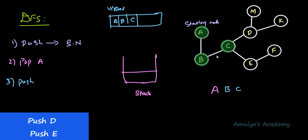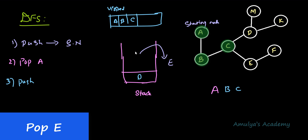Now C is visited. We push all the unvisited adjacent nodes of C onto the stack. D, E, and B are adjacent to C; B is already visited, so we push D and then E. We can push in any order. Now there are two elements in the stack. We perform pop — E is on top, so we pop E. E is not visited, so we visit it and add it to the visited list.